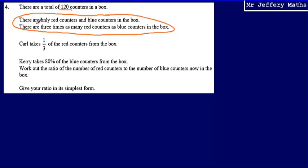We're told that there are only red and blue counters, and that there are three times as many red counters as blue counters in the box. So we can say that the number of reds to blues is in the ratio 3 to 1.